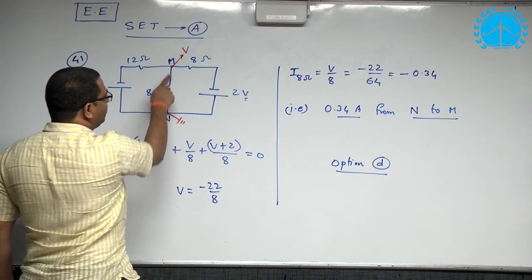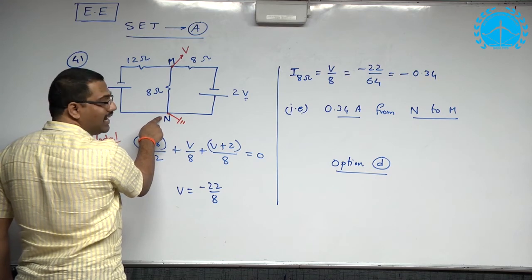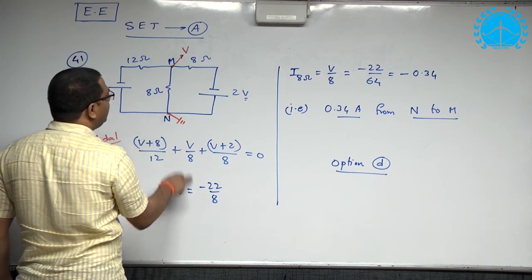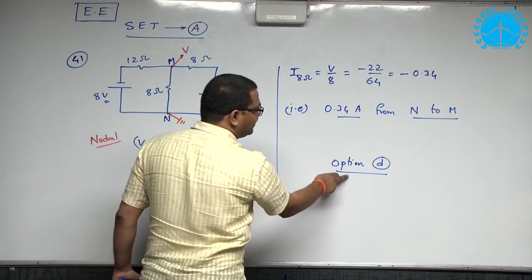That means M is negative with respect to N, so current physically has to flow from N to M and this current is V by 8, so option is D.